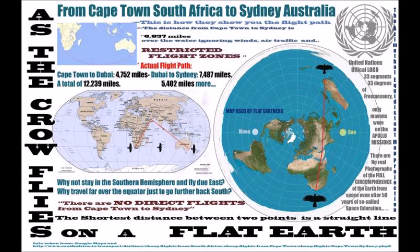If we look at the picture on the right, it makes a lot more sense. They're starting in Cape Town, doing a straight line to Dubai to refuel, and then continuing straight to Sydney. If anyone wants to argue against that, you can look these up yourself. You can go on flight tracker or flightpaths.com and track flights.